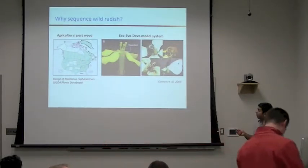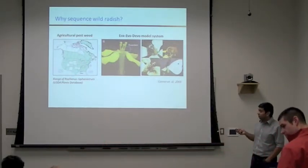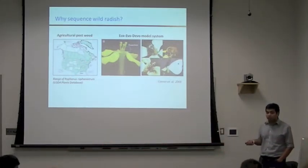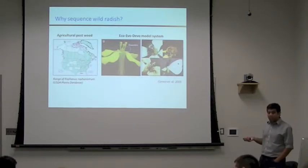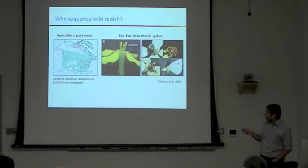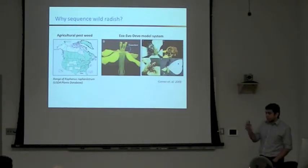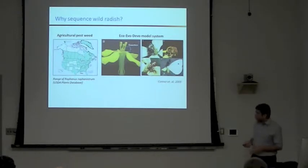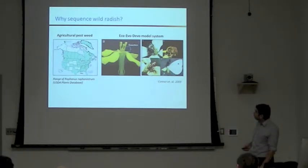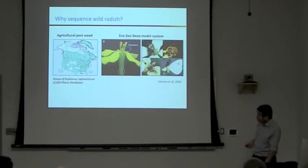Dr. Connor has been especially studying the correlation between different parts of the flower. One important feature in the ecology and fitness of the species is the difference between the height of the corolla tube and the anthers. If the anthers are too small, pollinators are not able to take out the pollen as easily, which affects the range of various populations. So it is being developed as a co-evo-devo model system here at MSU.